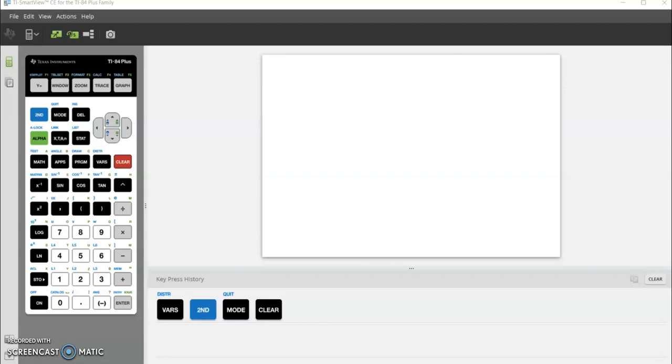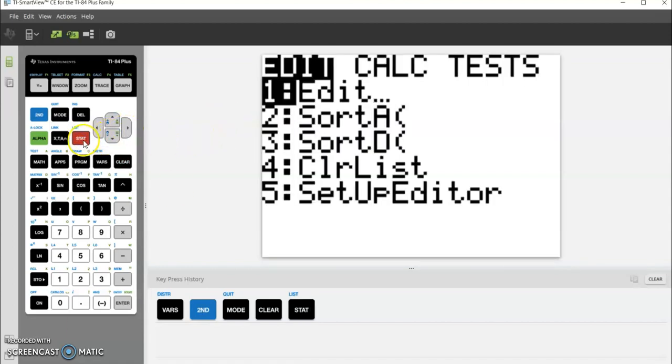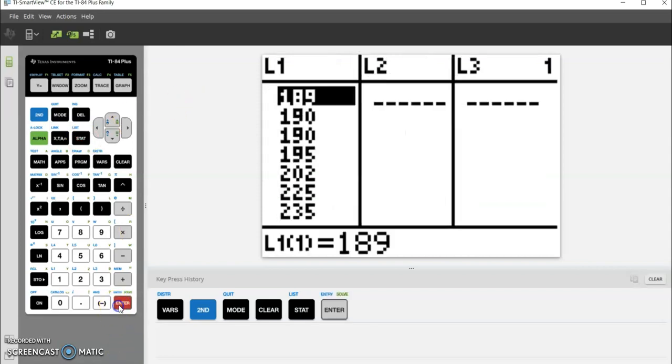I want to go over how to find standard deviation and variance on your TI calculator. To do that, first you need to input your data. Go to STAT, then EDIT, and you can see here is the football player data we were using in 3.1.